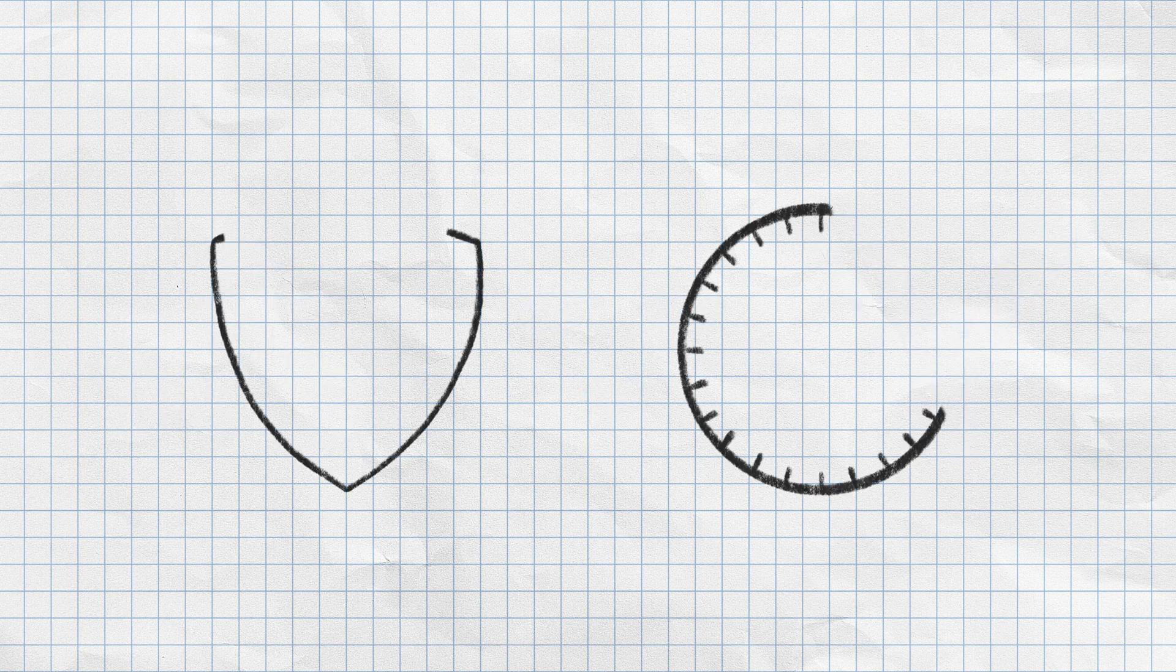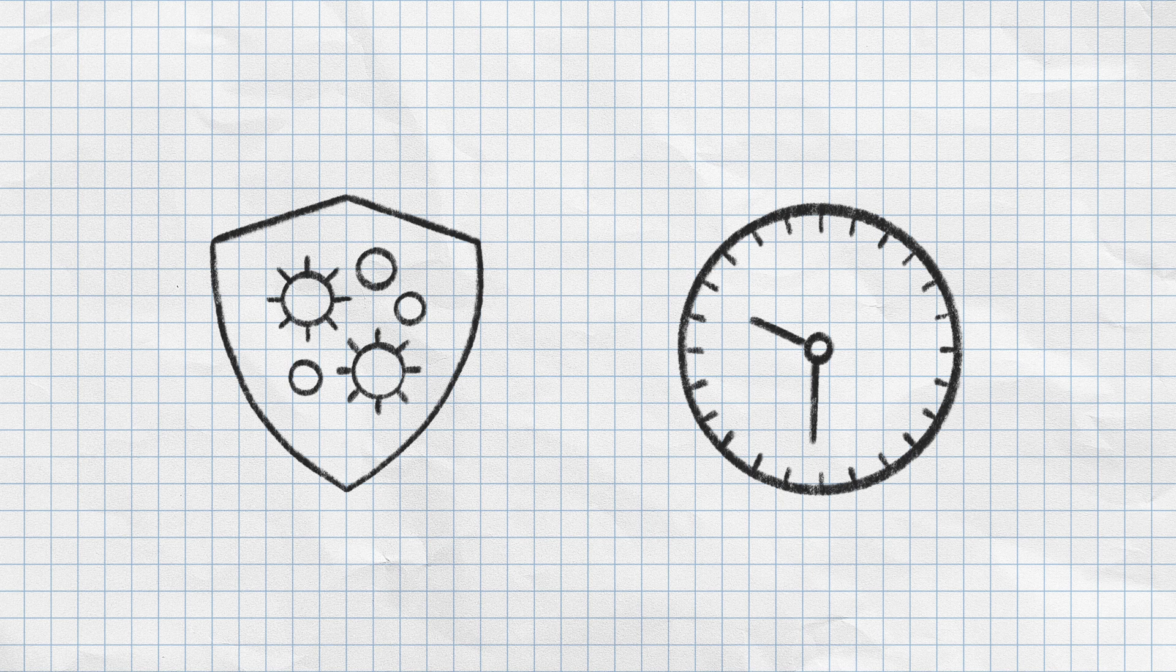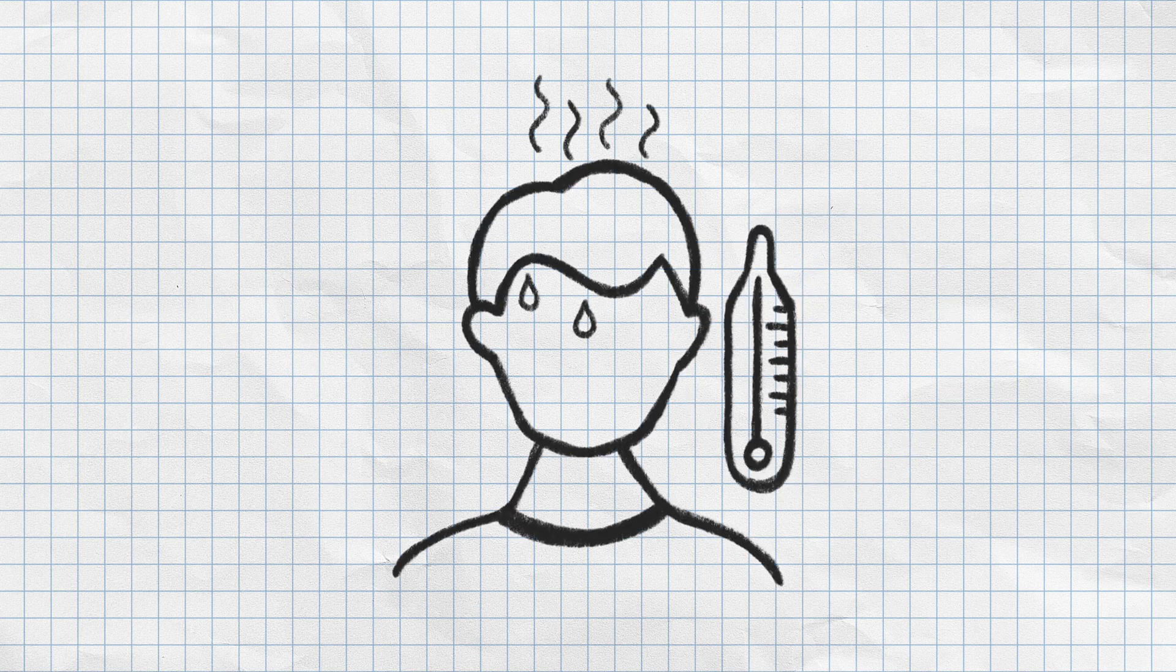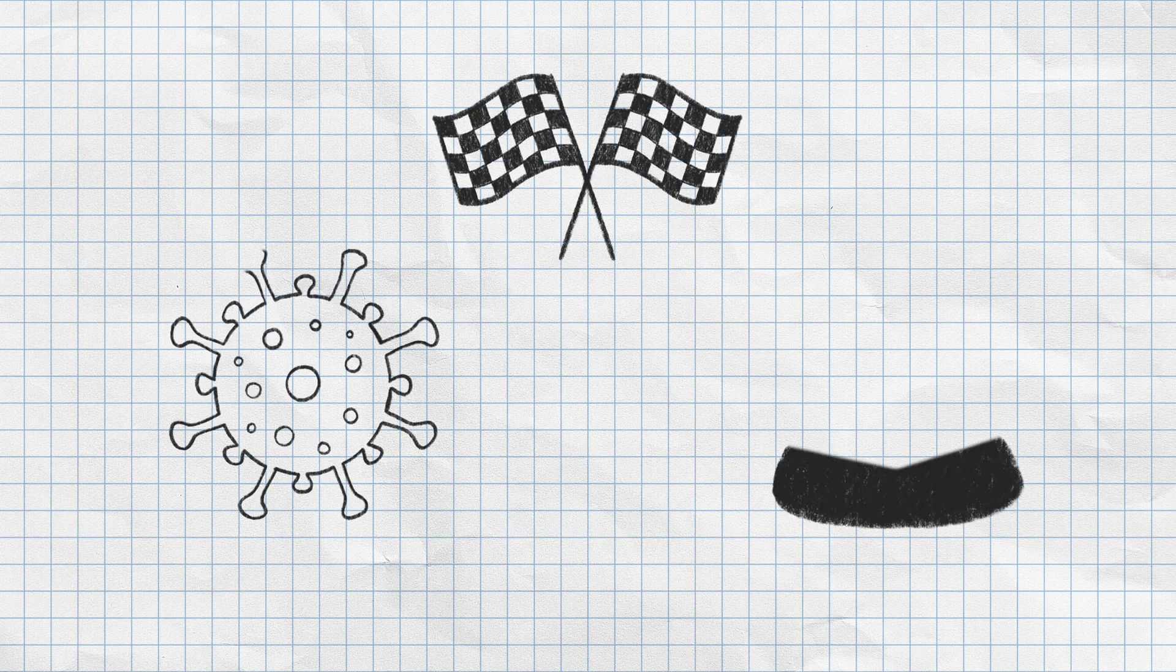It takes time for the immune system to respond and produce the exact antibodies needed to fight back. In the meantime, the person is susceptible to illness. It's a race between the invader and the host.